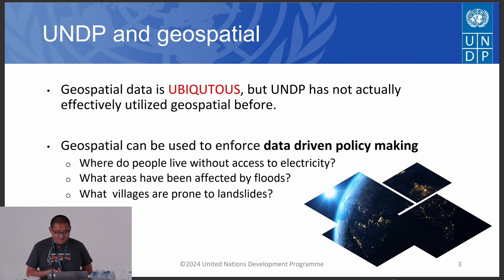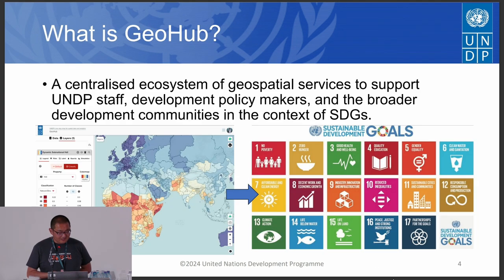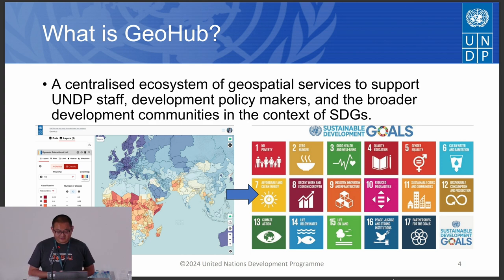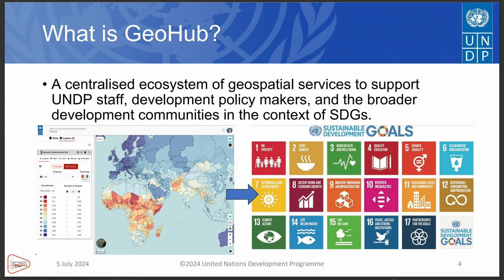Geospatial can be used to enforce data-driven policy making. For example, where do people live without access to electricity? Which areas can be affected by floods? To support such policy making, we are developing Geohub — a centralized ecosystem of geospatial services to support UNDP staff, development policy makers, and the broader development communities in the context of SDGs.